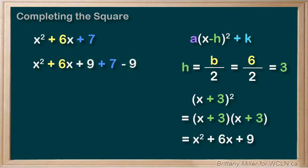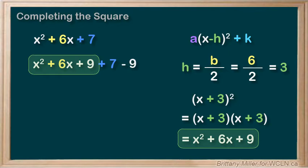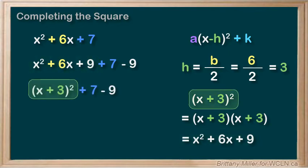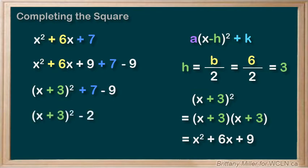Okay here's where the magic happens. This part of the expression factors into x plus 3 squared and then 7 minus 9 is equal to negative 2 and that's it. It's in vertex form.